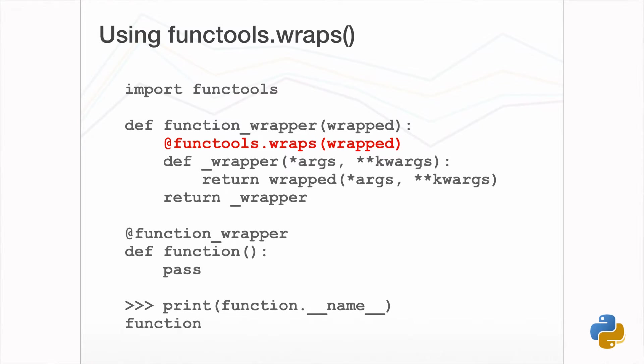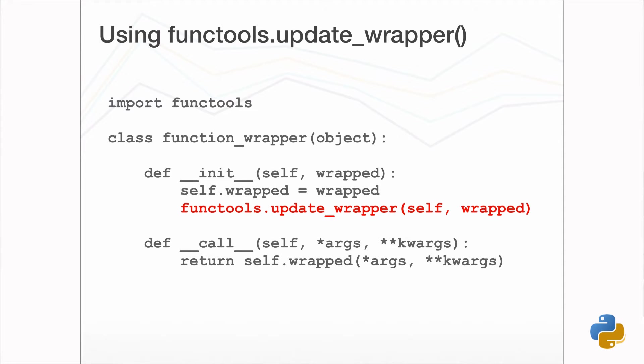Needing to manually copy the attributes is laborious, and would need to be updated if any further special attributes were added. For example, we should also copy __module__, and in Python 3, __qualname__ and __annotations__ were added. To aid in getting this right, the Python standard library provides the functools.wraps decorator, which does this task for you. If using a class to implement the wrapper, instead of functools.wraps, we would use the functools.update_wrapper function instead.